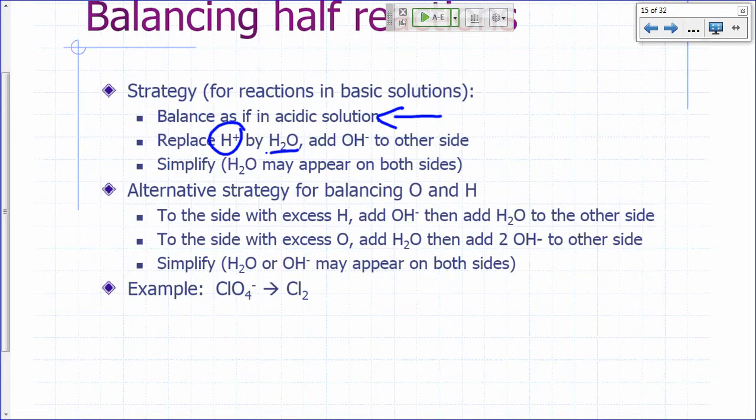And then wherever you see the H+, just replace that by H2O and then add hydroxide to the other side because that will take care of the, that will replace, that would get rid of any H+, and you're balancing half-reaction. And you may need to simplify it because water might appear on both sides.